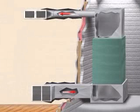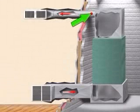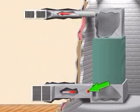To determine if the air flow is correct, make a temperature rise check. Insert a thermometer in the supply air duct as close to the furnace as possible, yet out of line of sight of the heat exchanger. Insert a thermometer in the return air duct as close to the furnace as possible.